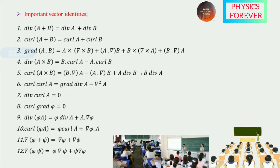Gradient of (A dot B) equals A cross (del cross B) plus B cross (del cross A) plus (A dot del)B plus (B dot del)A. Divergence of (A cross B) equals B dot curl A minus A dot curl B.